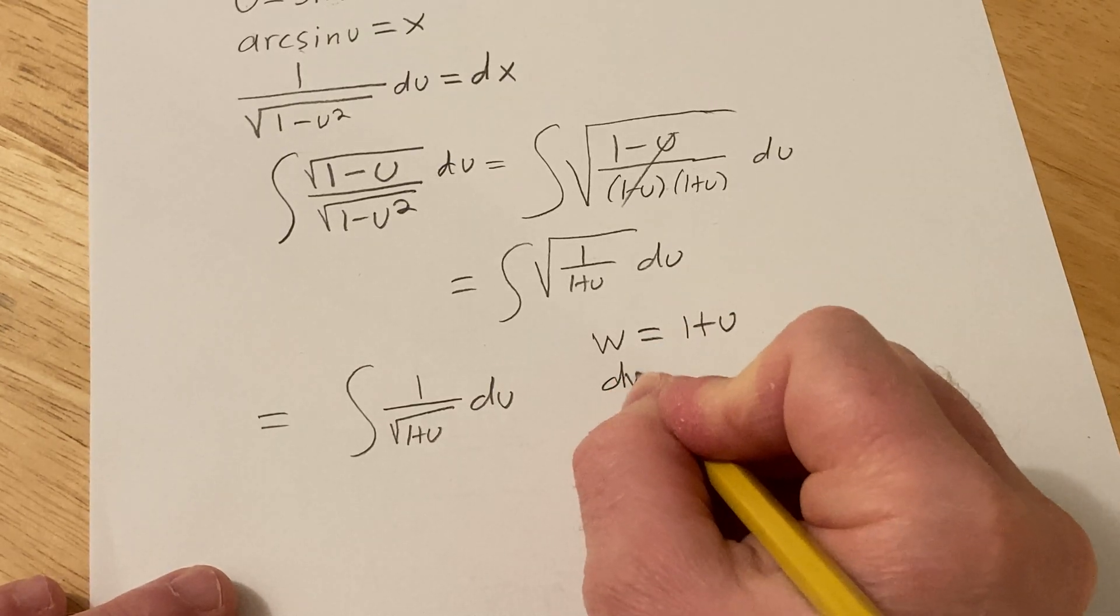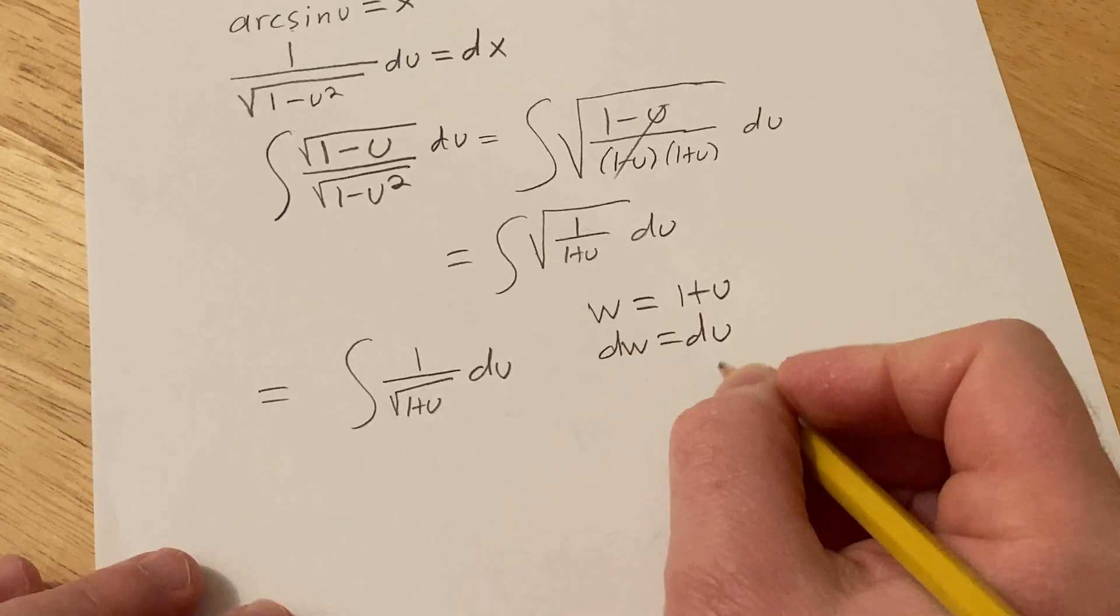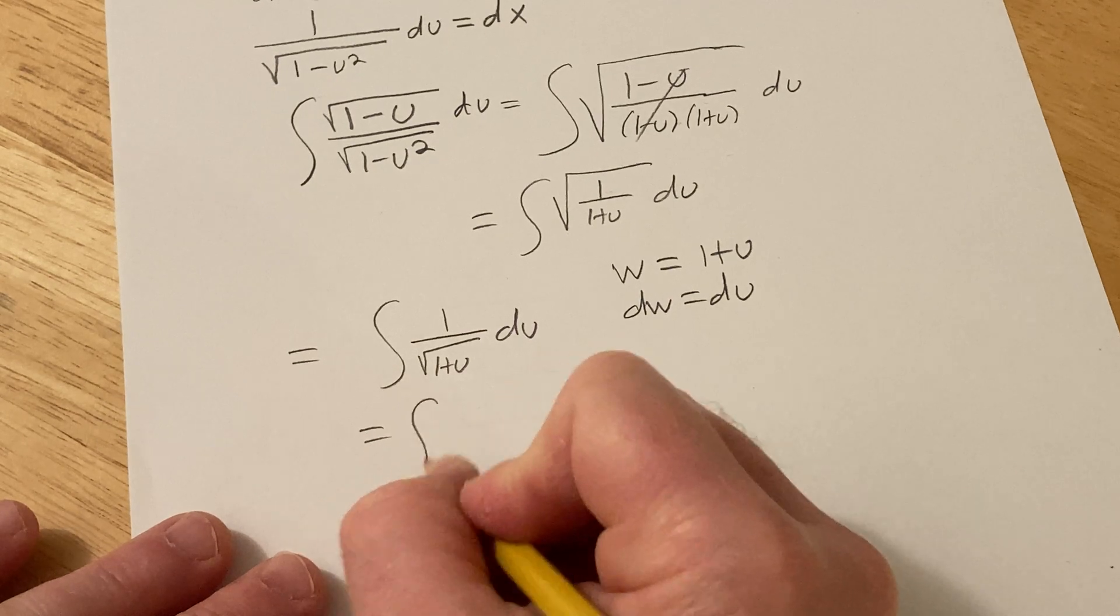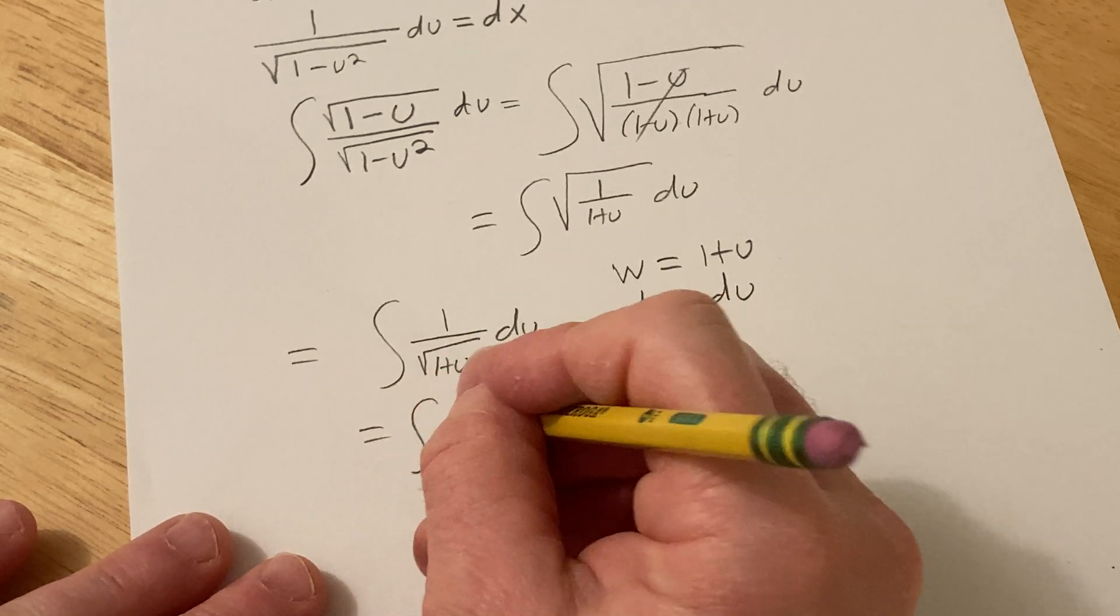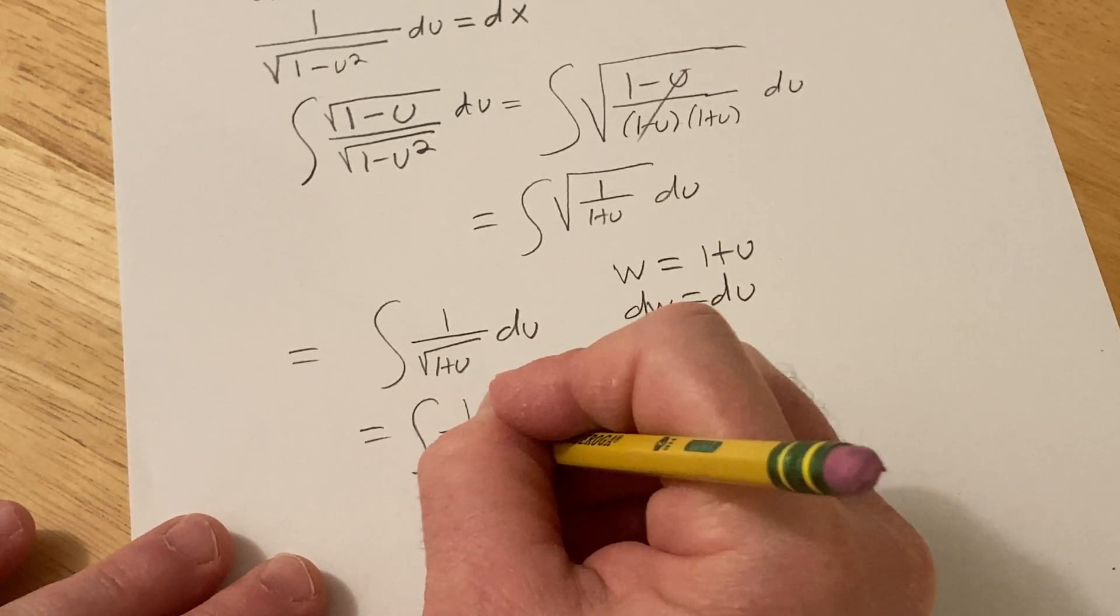so dw is equal to du. So this becomes the integral of, I guess I'll show the step, 1 over the square root of w dw.